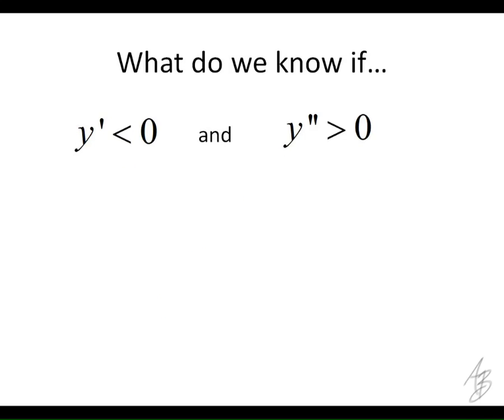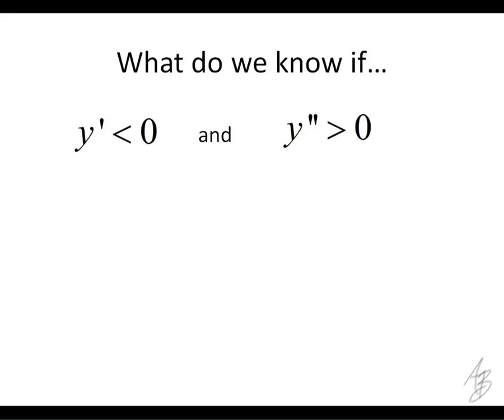If we're looking at an interval where the first derivative is negative, the function is decreasing, and if the second derivative is positive that means it's concave up. We're going to be looking at this part of the function right here — it might look like that — so we know which way it's curving and which way it's going.